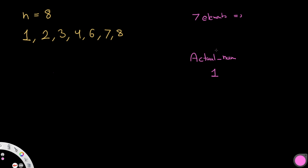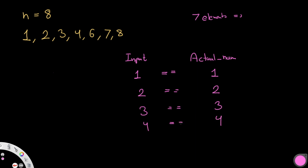We get the actual number initialized as 1 and also take in the input of all the n minus 1 numbers. The first number we get is 1, which equals the actual number — not missing. We go to 2, then 3, then we expect 4 and get 4. Now we expect 5 but the number we get is 6. Since 6 is not equal to 5, that means we expected 5 but didn't get it — so 5 is the missing number, and that's what we return.